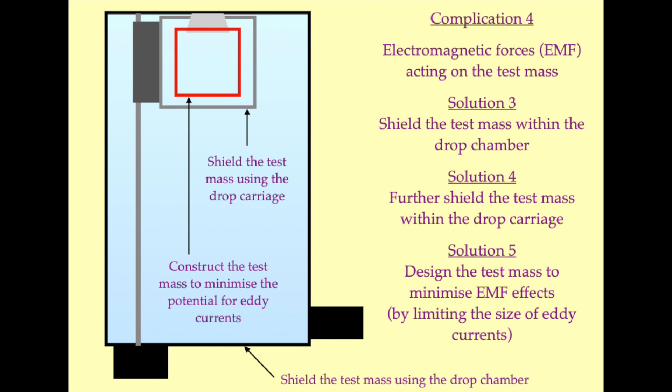We must also consider the possibility that the motion of the test mass may be impacted by external electromagnetic forces. The potential impact of such forces may, however, be minimized by making appropriate decisions about the materials and the design of the drop chamber casing, the drag-free carriage, and the test mass itself. While the influence of electromagnetic forces cannot be completely excluded, with appropriate choices at this point in the design process, we can reduce their effect to be insignificant.